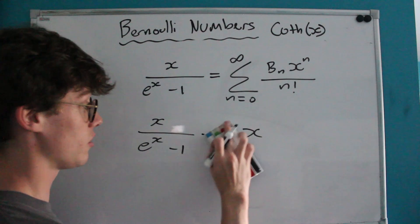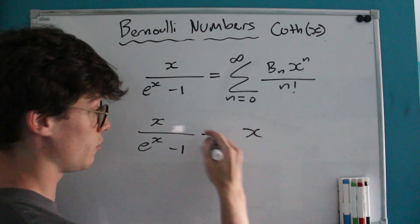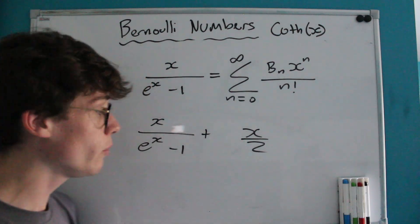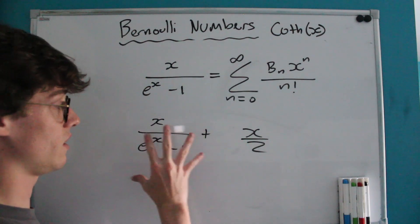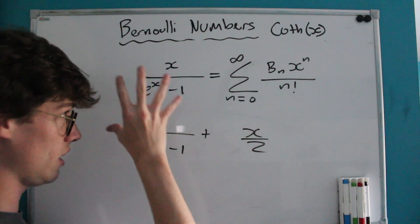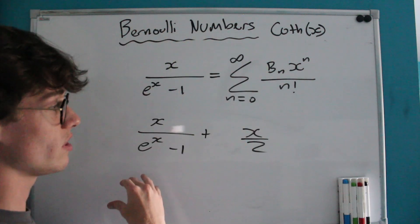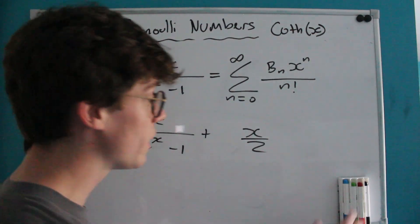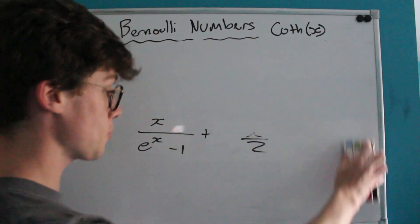We can actually prove that. We can show that X over e^X minus 1 minus b_1 X, which is also known as plus X over 2, is an even function. But actually, we're not done with evaluating this function as a whole, the entire Bernoulli generating function minus that one odd Bernoulli number, because there's more we can get out of this.